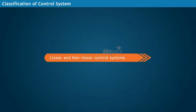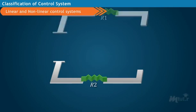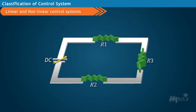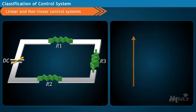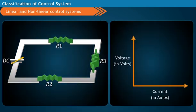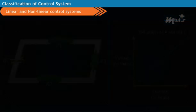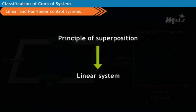Linear and non-linear control systems. Consider a purely resistive network which is powered with a variable DC source. Its voltage versus current characteristics is a linear line because it obeys the principle of superposition. Such a system is called a linear system.